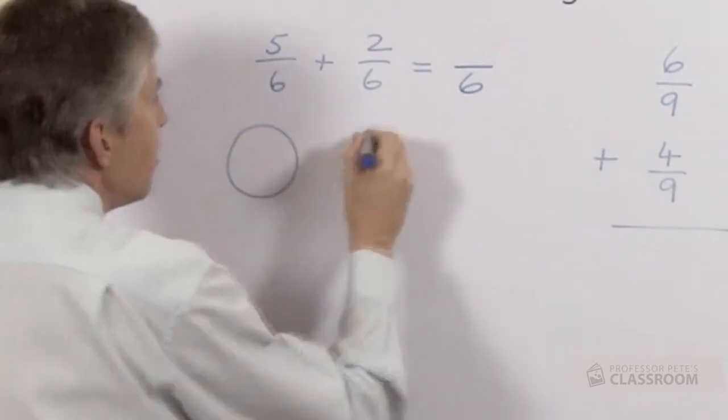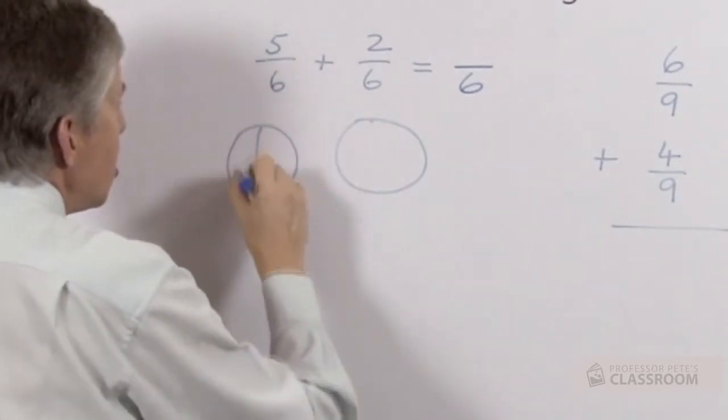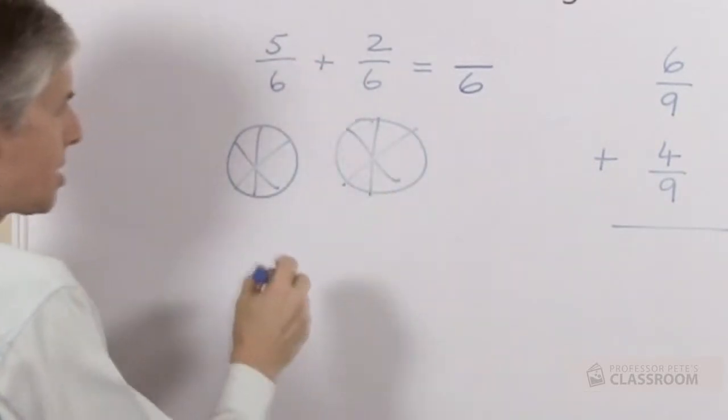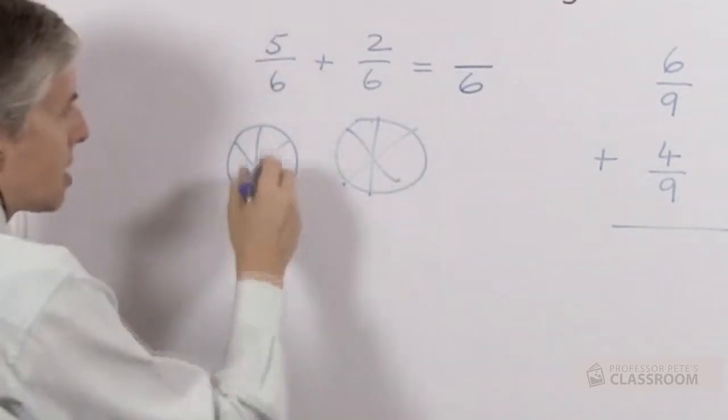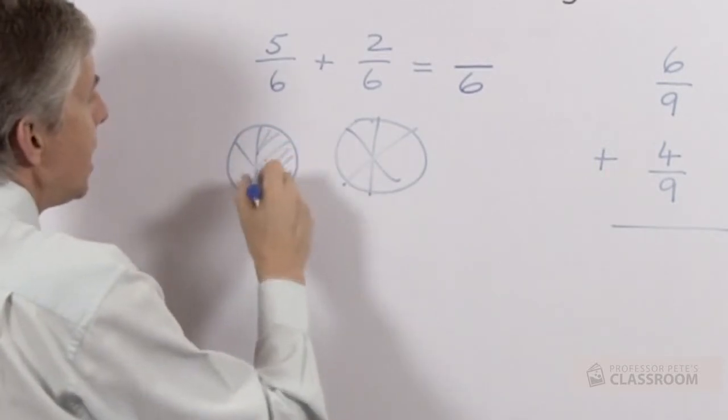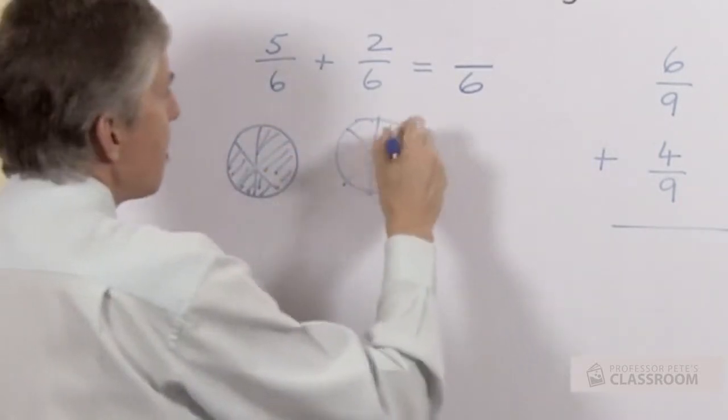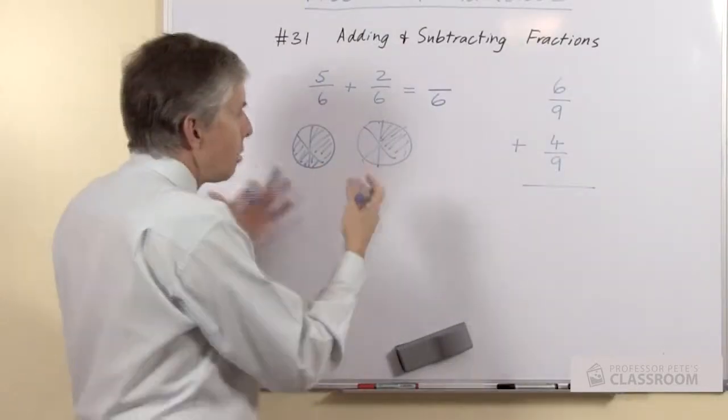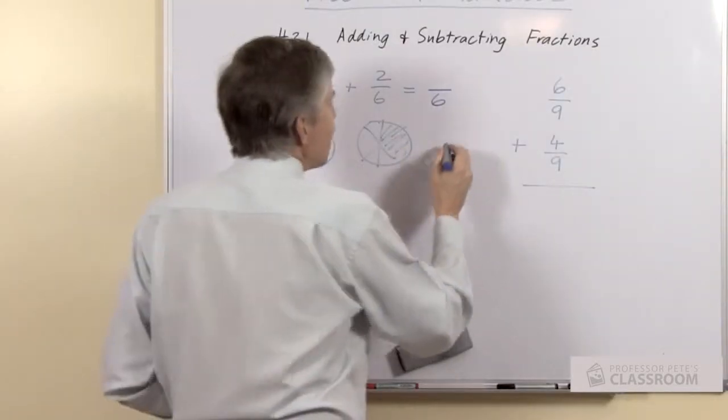Of course we should use diagrams to help the students. So early on especially we want our students to be able to see that sixth. That's not a very good diagram but sixths are like that. We will shade in five sixths on one shape, two on another. Of course the circles must be the same size so that we can add them together. We can see that will make seven.